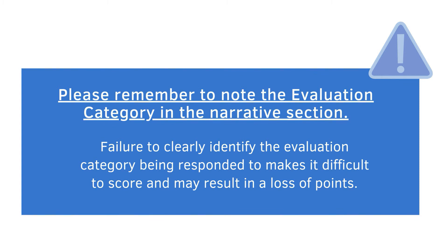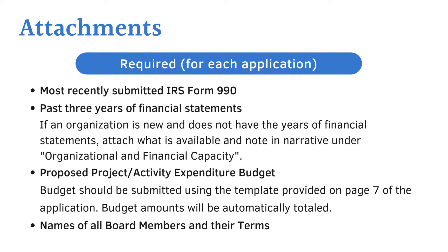Along with the application, organizations will submit several attachments to create a complete submission package. The following are required for every application: your most recently submitted IRS Form 990 and past three years of financial statements. If an organization is new and does not yet have all of these items, please submit what's available and note why in the organizational and financial capacity portion of the response. Applicants also need to complete and submit the budget template found on page 7. Please use the included form. If you need additional items, contact staff.